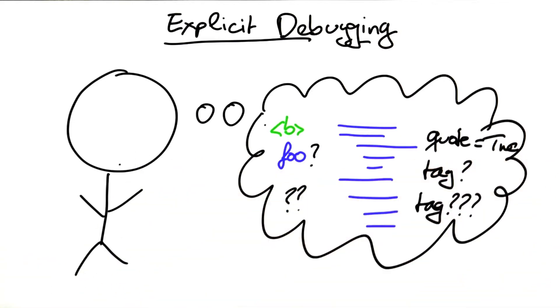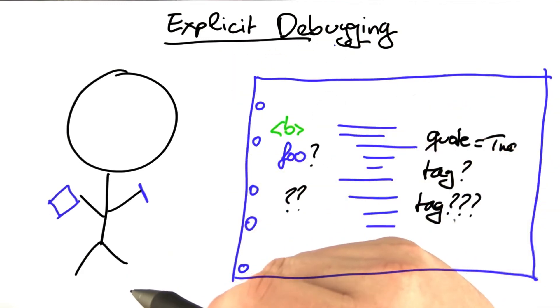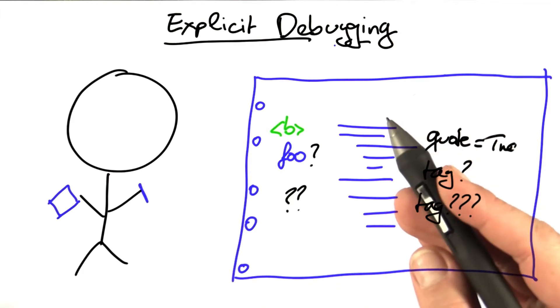The alternative to this implicit debugging where you're keeping everything in your head, of course, is explicit debugging. Explicit debugging at first simply means to write down what you're doing.